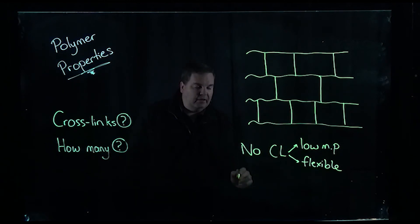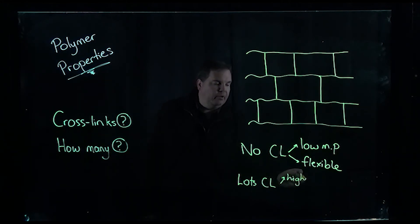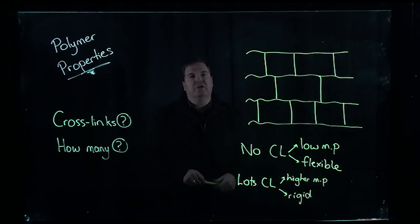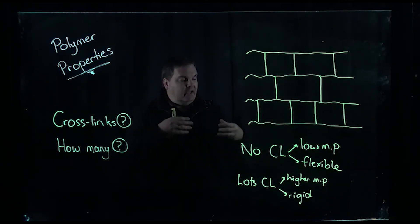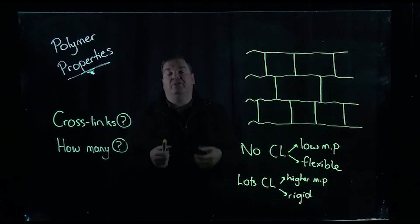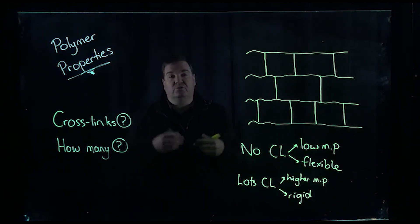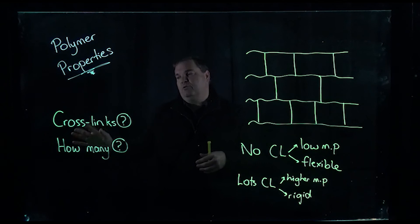When you add in lots of cross links — lots of links between the chains — you then generally get a higher melting point and they tend to become more rigid. This is where you get your hard plastics used for chairs or tables. What you get is something much more solid and rigid, but when you burn them they actually char — they turn black. You can't melt them and remold them into another shape. I'll cover that in more detail in a video about thermoset and thermoplastic polymers. But for now, just think about whether there are cross links and how many.